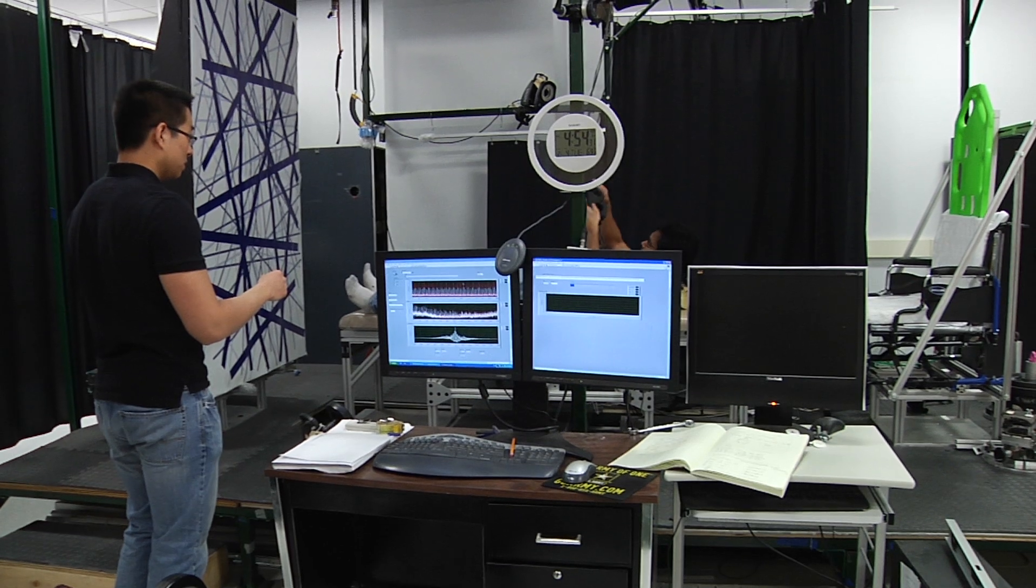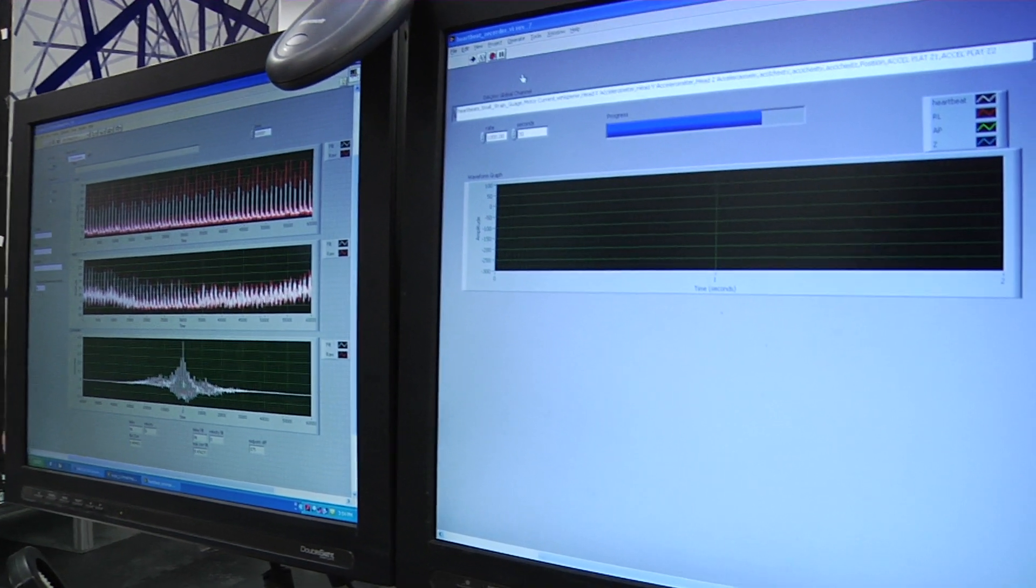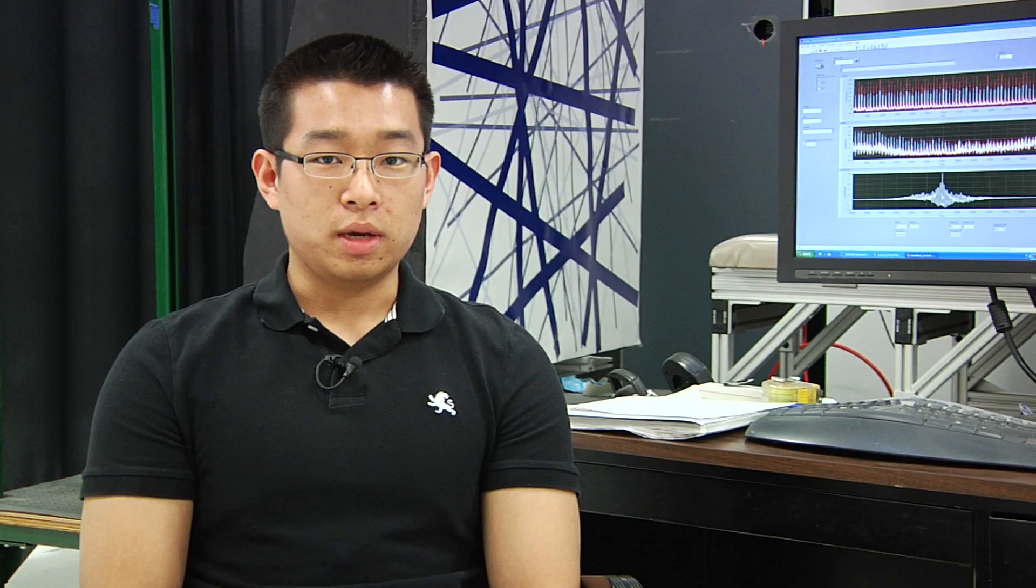So the general idea is that when the heart's beating, cardiac induced mechanical vibrations can be measured from the surface of the body. So using accelerometers we can measure something that's called the pulse wave velocity, which is an indicator of a person's cardiac health.